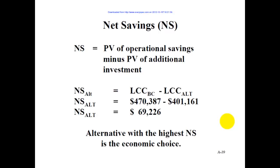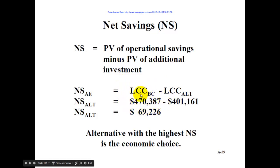First, the net savings, which is just the difference in net present value — or in this case, this slide uses LCC, the life cycle cost, as the net present value. When we plug in the base case and the alternative life cycle cost, the life cycle cost of the alternative is lower, so when you subtract them, you get a net savings of $69,000 in this case. When the alternative is lower, it costs less, so you want to go forward with the project. Net savings would be positive, and the highest net savings is the best — the most economic choice.